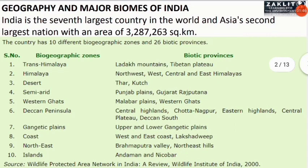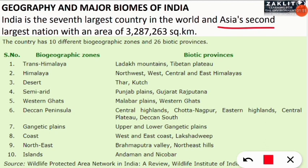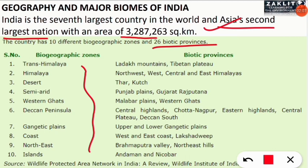India is the seventh largest country in the world and Asia's second largest nation. India has an area of 3,287,263 square kilometers. The biogeographic zones are divided into 10 categories and 26 biotic provinces.